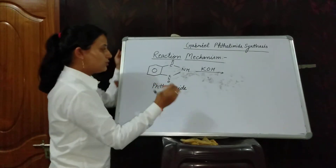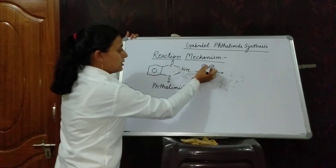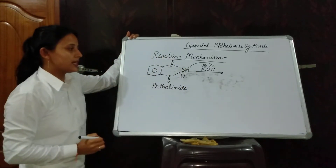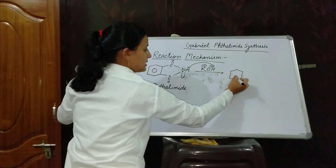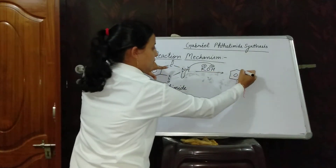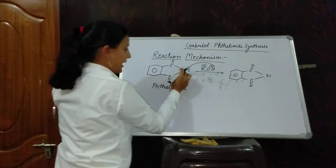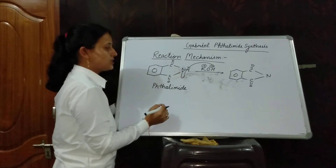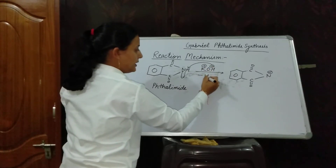As you know, a base has the tendency to abstract a proton. It will abstract H+ from phthalimide, and the bond electron density shifts to the nitrogen atom due to the electronegative nature of nitrogen. Nitrogen gets a negative charge, H+ and OH− combine to remove water, and K+ remains in solution. This means formation of a potassium salt takes place.